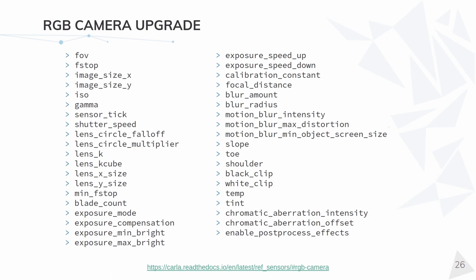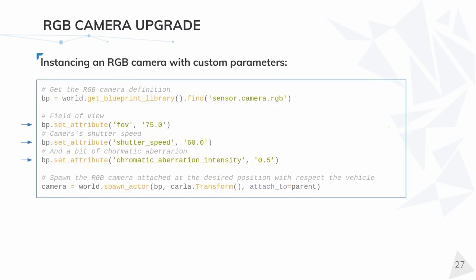These are all the configuration parameters just for the RGB camera. Some of them, such as the lens distortion ones, are shared with other camera-based sensors like the semantic segmentation. An explanation of what they do can be found in our documentation at the link below. Here is an example of how to instantiate an RGB camera with some of the previous parameters — in this case, a field of view of 75 degrees, a shutter speed of 60, and a bit of chromatic aberration to create some nice noise effect. Getting the blueprint and spawning it is exactly the same as before.